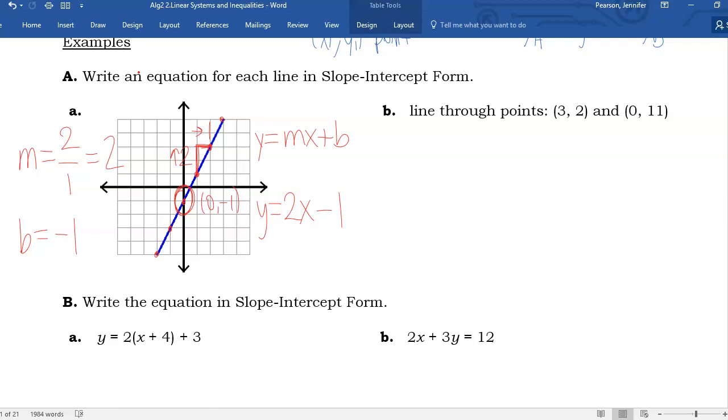So my equation in mx plus b form is going to be y equals 2x minus 1. Now the thing about y equals mx plus b is we could technically also write the intercept first as long as the slope gets the x. It doesn't matter which one's first, which one's second. This is conventionally the way we do it, but they're both correct.